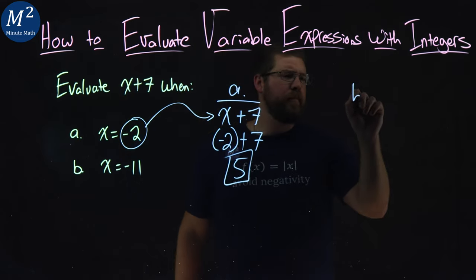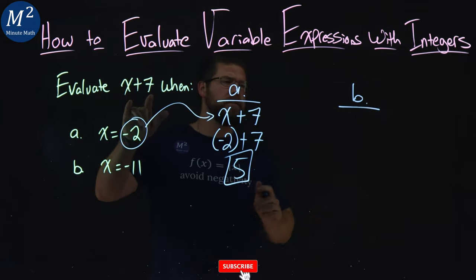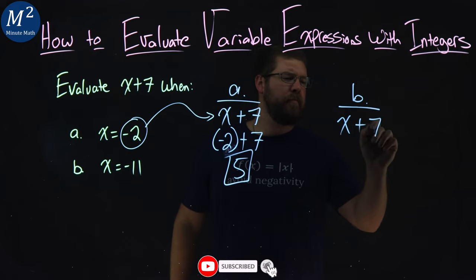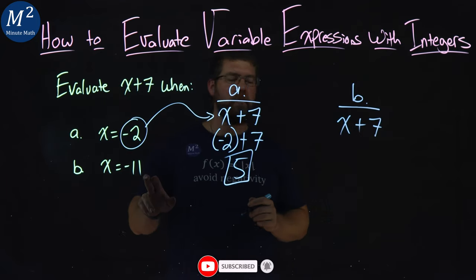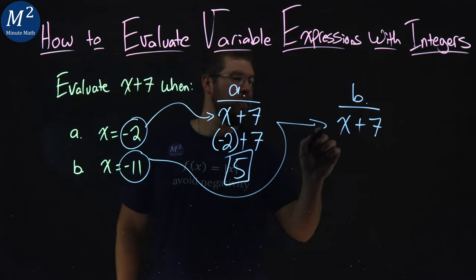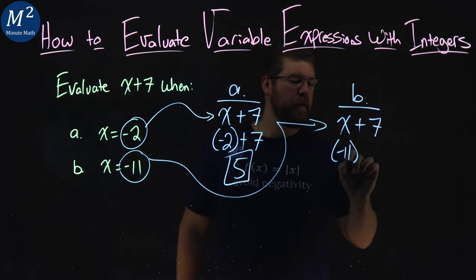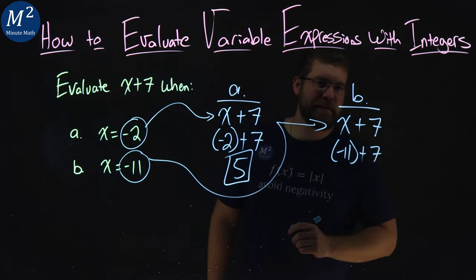Now what about part B? A little different. Same beginning though. x plus 7, we rewrite. Now we want to substitute the negative 11 in for x. Negative 11 goes in for x here, and then we have plus 7.